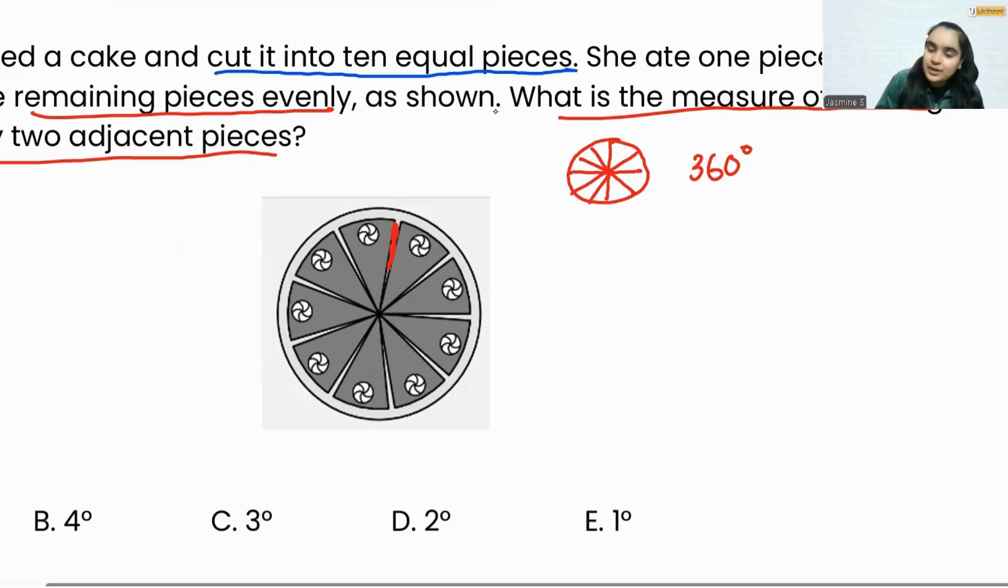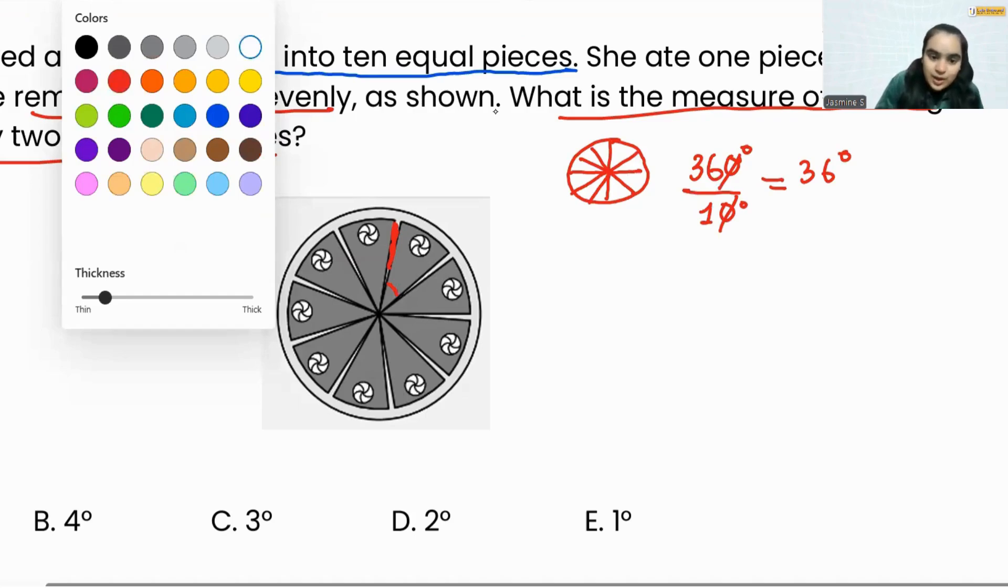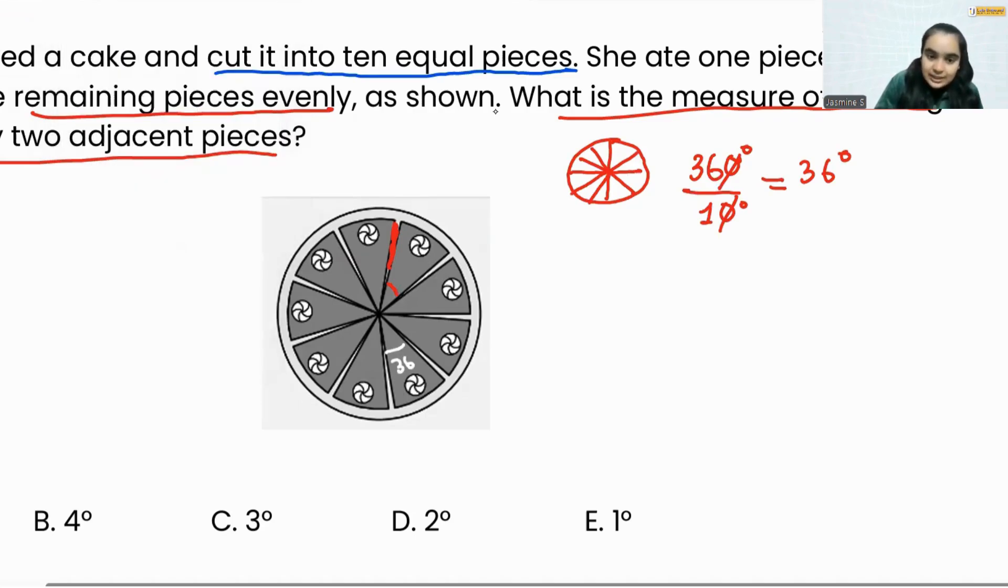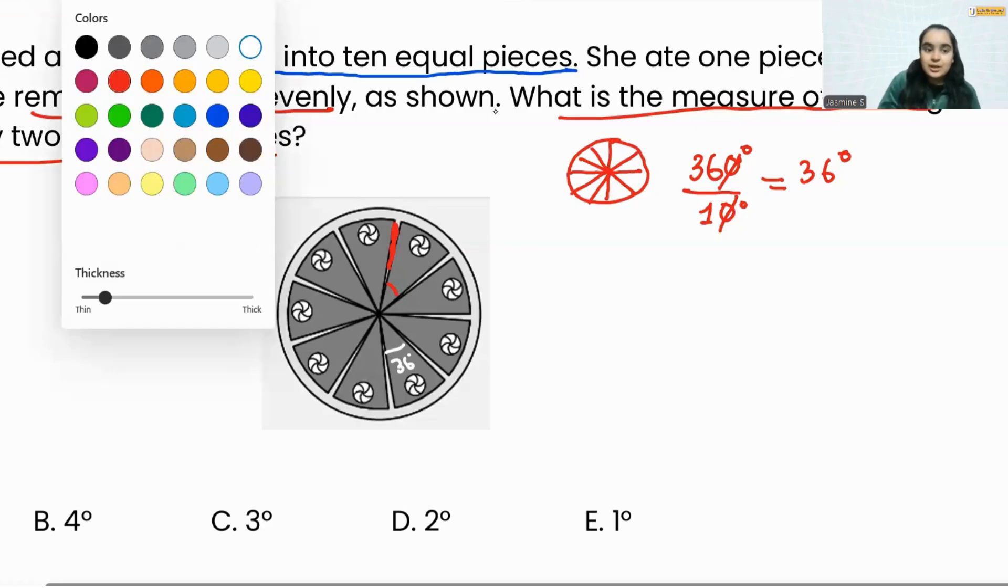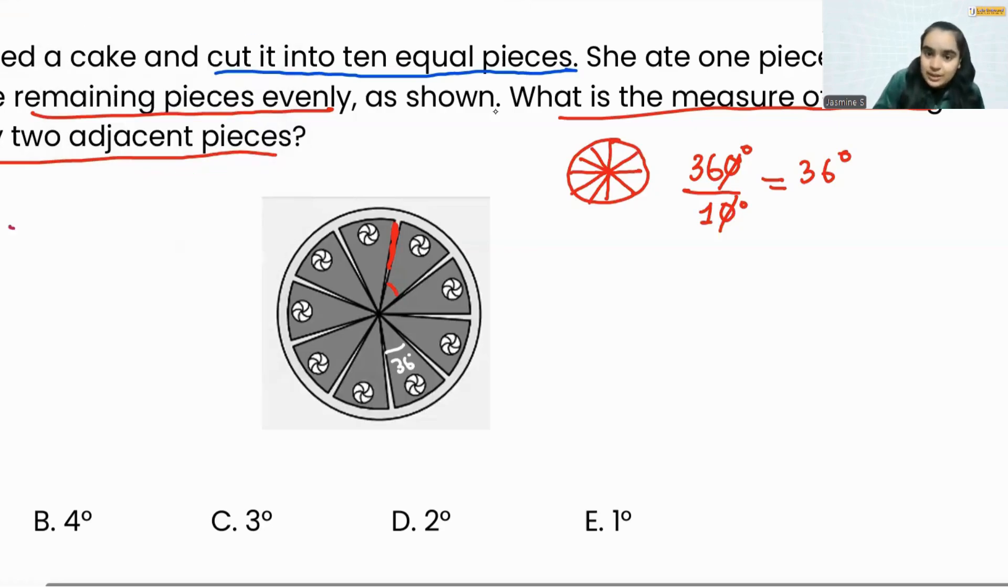Now 360 degrees is the complete one whole angle which we are dividing into 10 equal pieces. What we can do is simply 360 divided by 10, which means each piece will have the angle of 36 degrees. From here what we got is that every piece has an angle of 36 degrees.